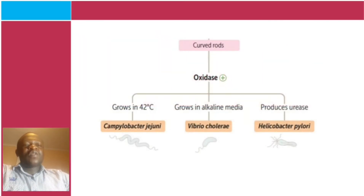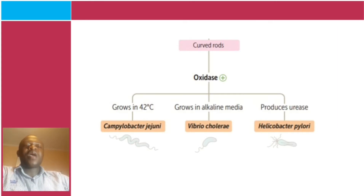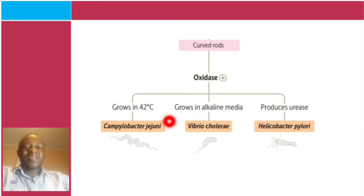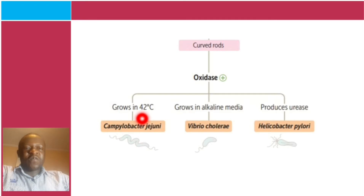Here is the basic classification of gram-negative bacteria. All of them are oxidase positive, and they include Helicobacter pylori, Vibrio cholerae, and Campylobacter jejuni. What's peculiar about H. pylori is that it produces urease; Vibrio cholerae grows in alkaline media; and Campylobacter jejuni grows at 40–42 degrees Celsius.